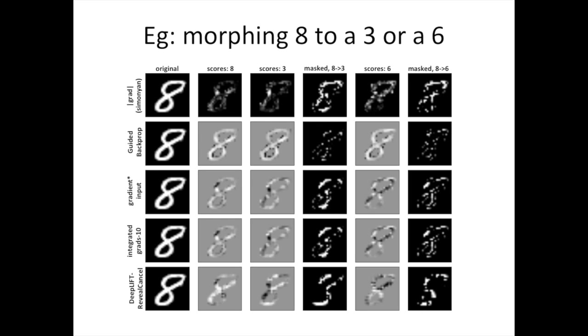You might wonder if we cherry-picked this image to favor DeepLIFT, and the answer is no. In fact, we cherry-picked this image to favor gradient times input and integrated gradients. This is the example on which both of those methods produce the highest change in the log-odds score for converting the 8 into a 6.